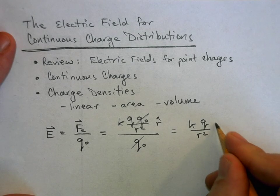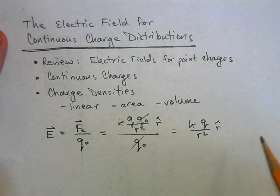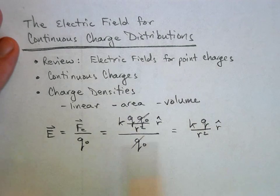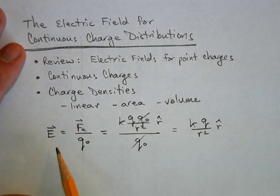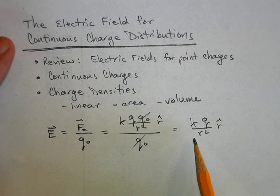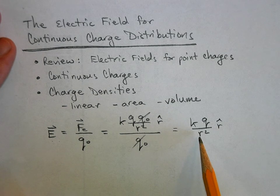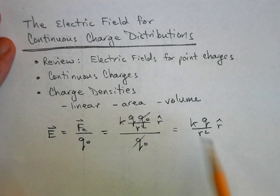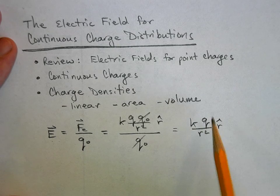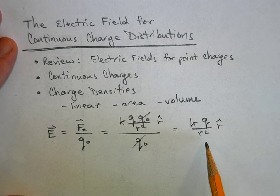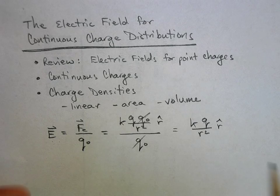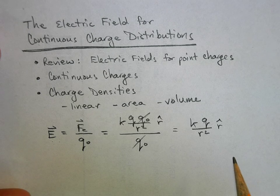That's for an individual charge. To figure out the field for a whole bunch of point charges, you just sum them — you figure out the field for each individual charge and add them all together. That's the principle of superposition.